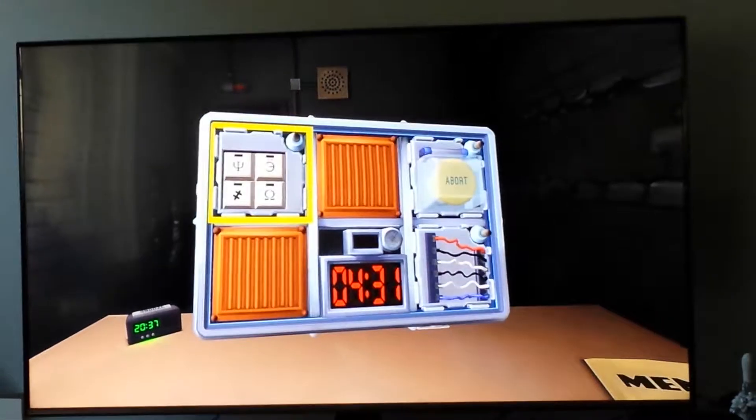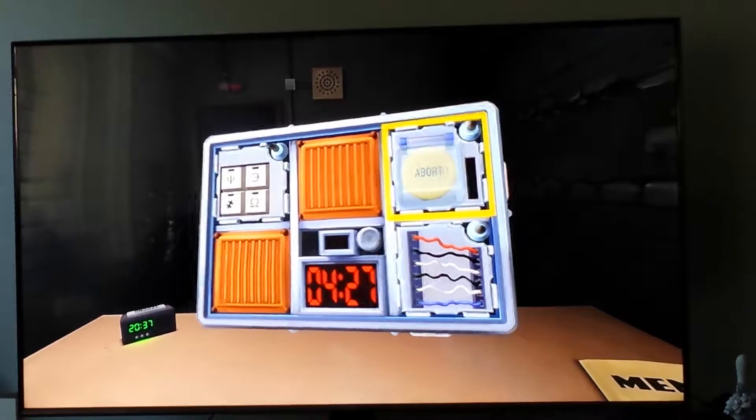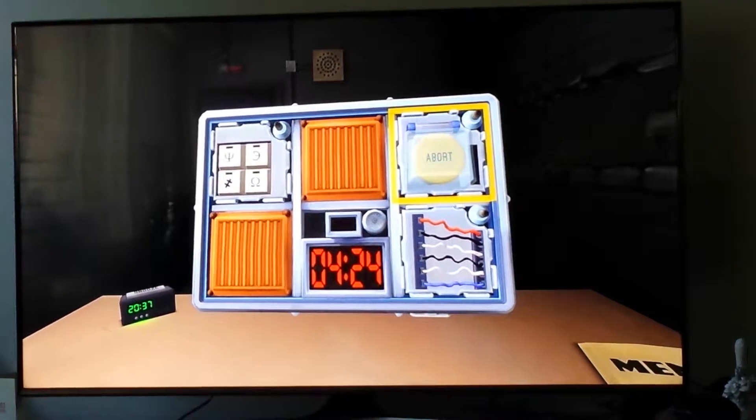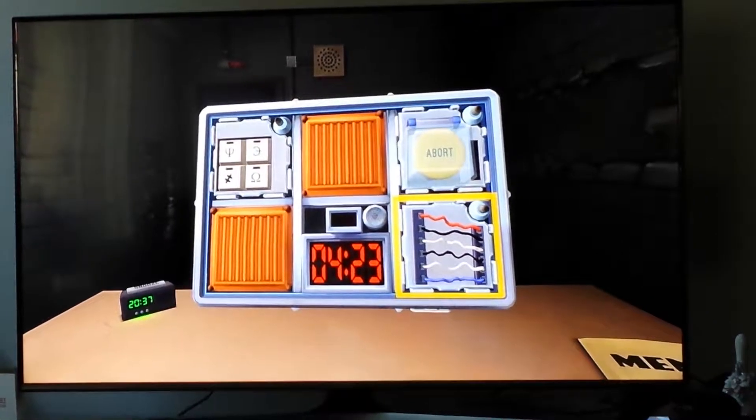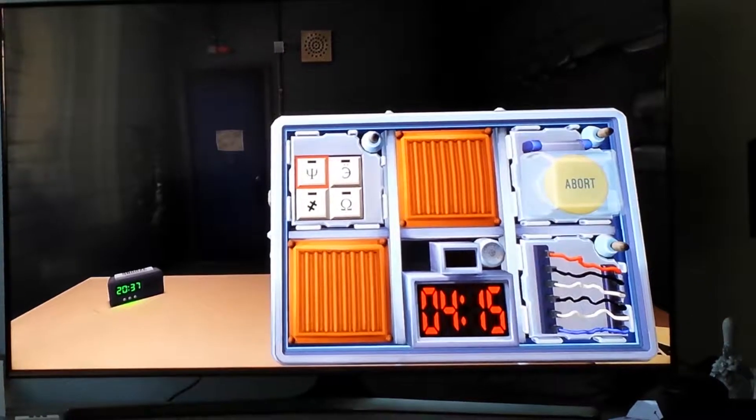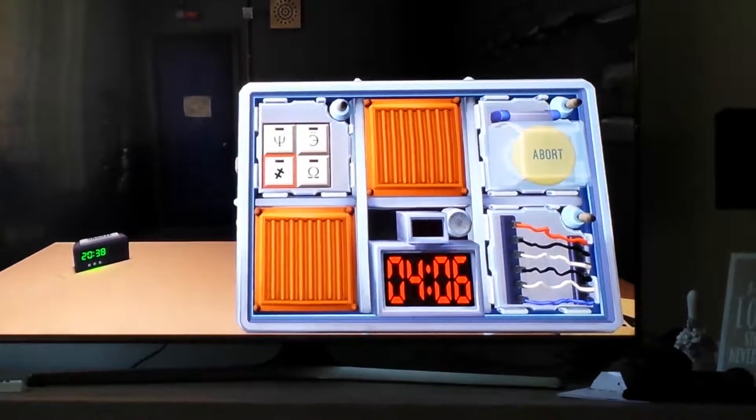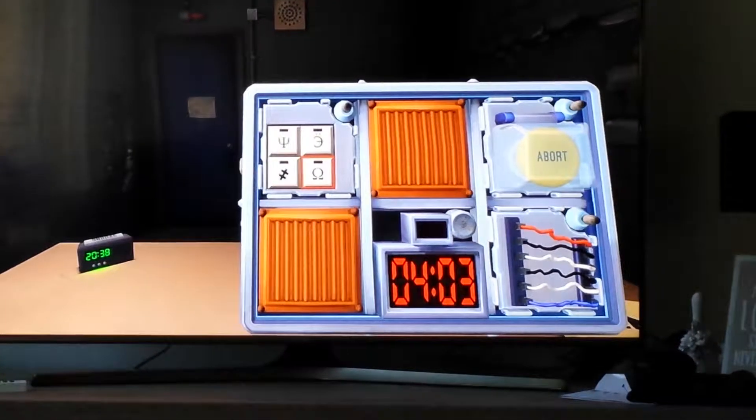What do you see? There's a thing that looks like it has Greek characters, four Greek characters. There's an Omega in the bottom right. There's a big module with a yellow abort button. Do the Greek symbols first. What do you see? One thing that looks like a trident in the top left. Top right looks like a reversed Euro sign. Bottom left looks like a puzzle piece. And then bottom right is the Omega sign. Okay. You need to press the inverted Euro.